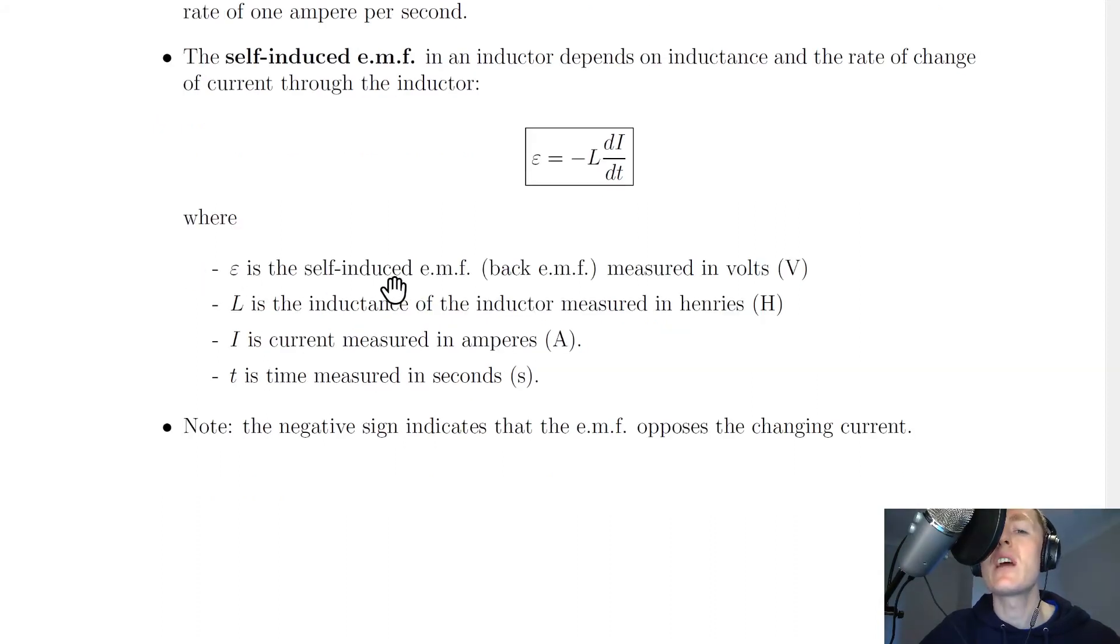Where epsilon is the self-induced EMF or back EMF measured in volts, L is the inductance of the inductor measured in Henrys with a capital H, I is current measured in amperes, and t is time measured in seconds.